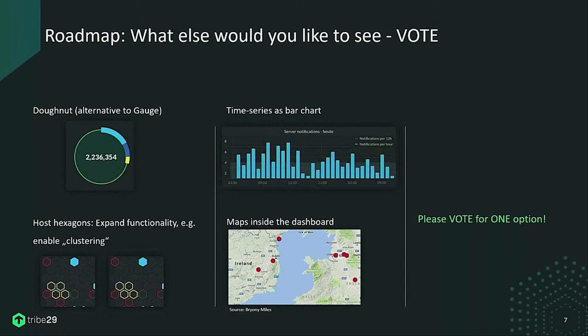Looking at the poll results, the time series bar chart has won this vote. It doesn't show any new information, but it shows compressed information that might be very helpful. The idea is also that if you click on a bar, you get a drill-down for that specific time period.